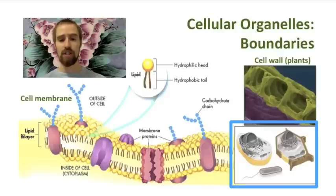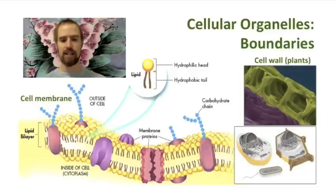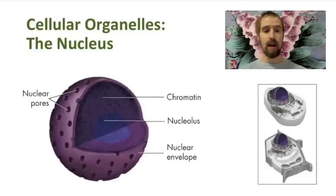Plant cells also have a cell wall around the outside of the cell membrane. This cell wall is made of a carbohydrate called cellulose, and it provides additional protection but also extra strength and rigidity. Plants don't have skeletons after all, so this cell wall helps to support the weight of a plant against the force of gravity. Bacteria also have cell walls, but this bacterial cell wall is made of a different material and is structurally very different than the cell wall around a plant cell.